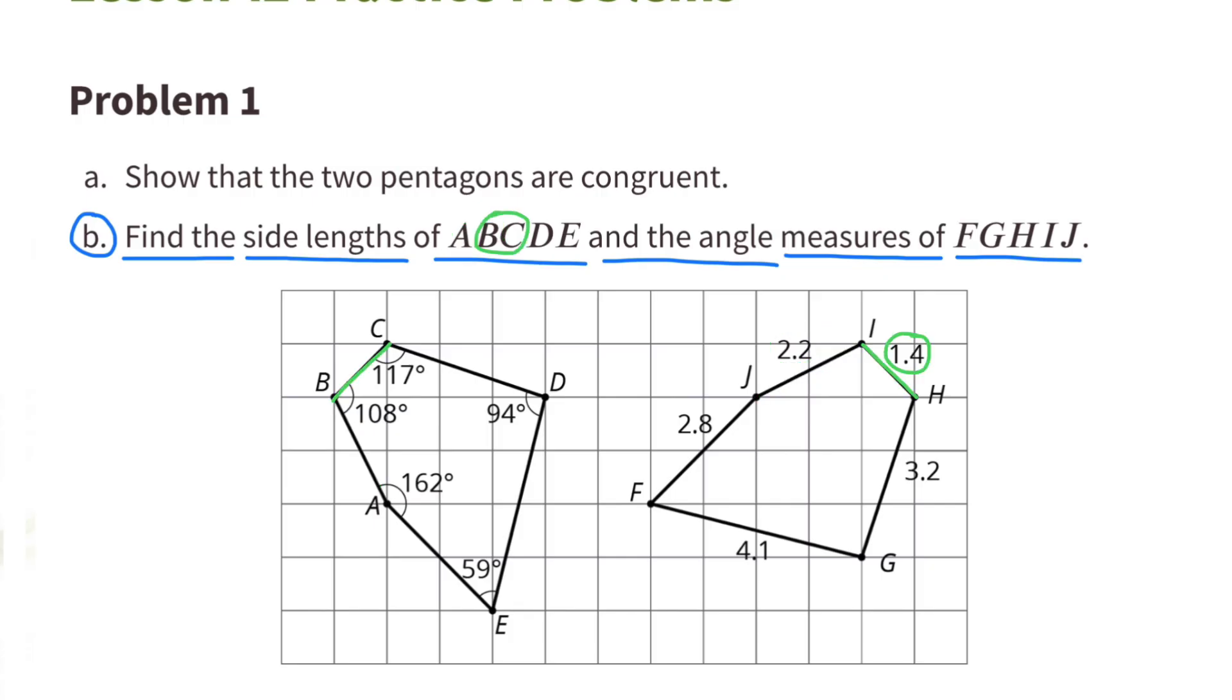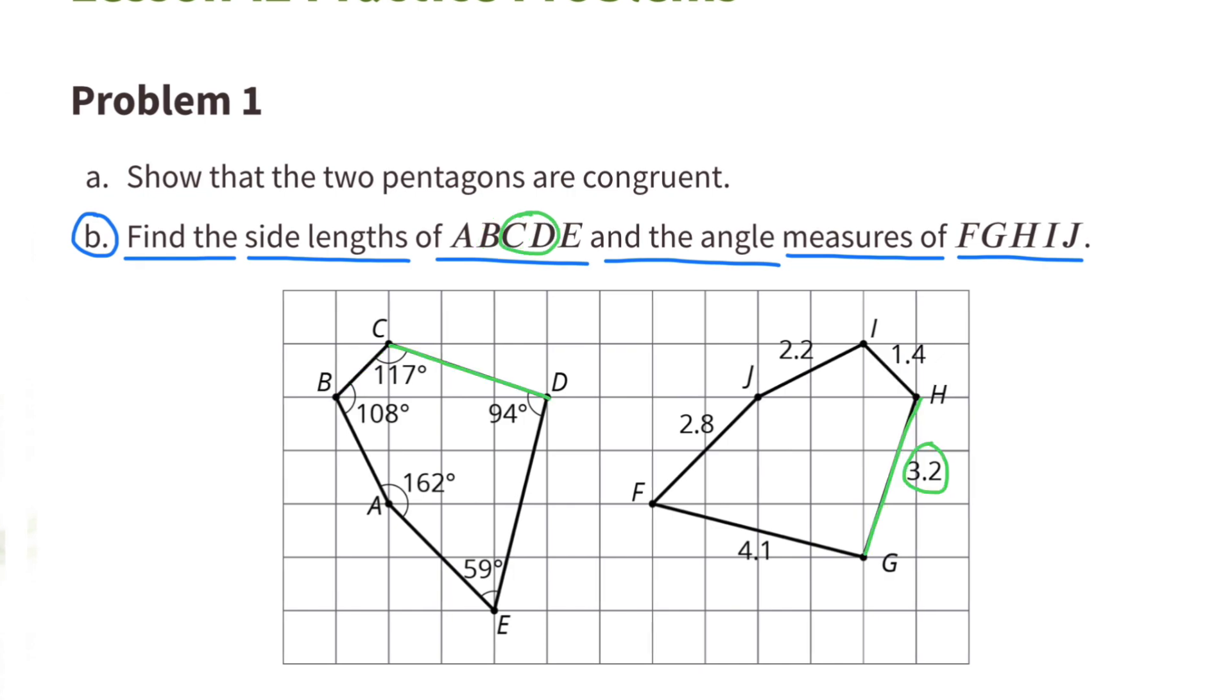B.C. is 1 and 4 tenths. C.D. is 3 and 2 tenths. D.E. is 4 and 1 tenths.